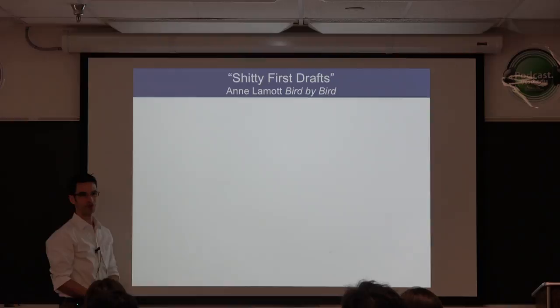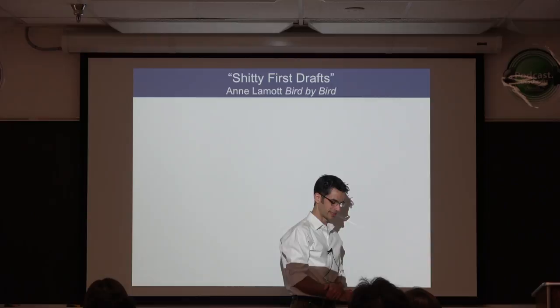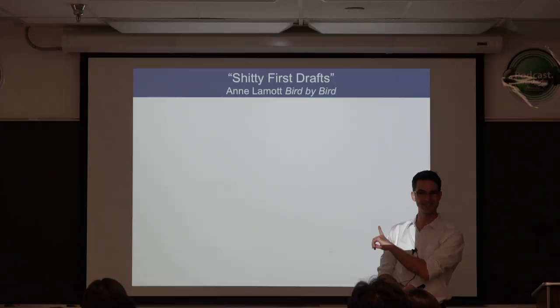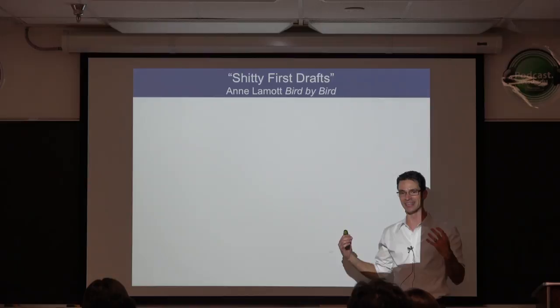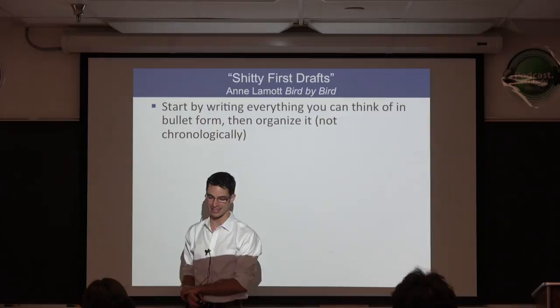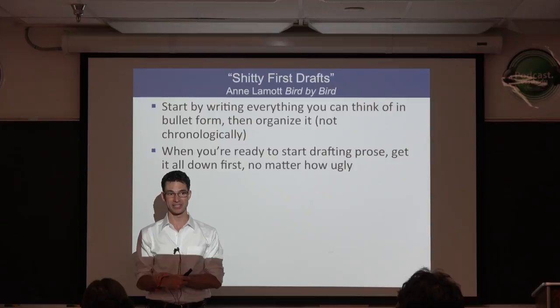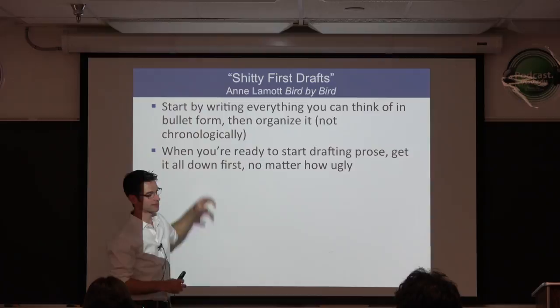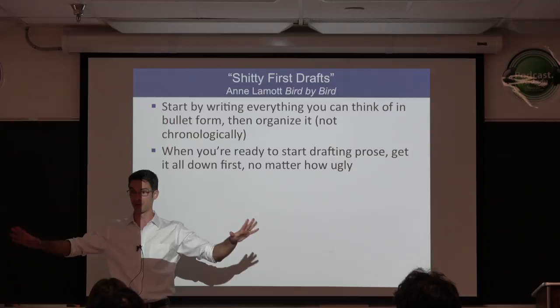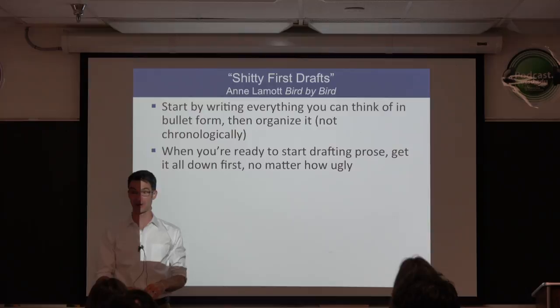There is a book on writing by Anne Lamott called Bird by Bird with a section called 'Shitty First Drafts.' I really like to embody the shitty first draft when I sit down to compose something for the first time. You start by writing everything you can think of in bullet form, then organize it — not necessarily chronologically. When you're ready to start drafting prose, get it all down first, no matter how ugly. Write your first draft as if no one will ever read it.